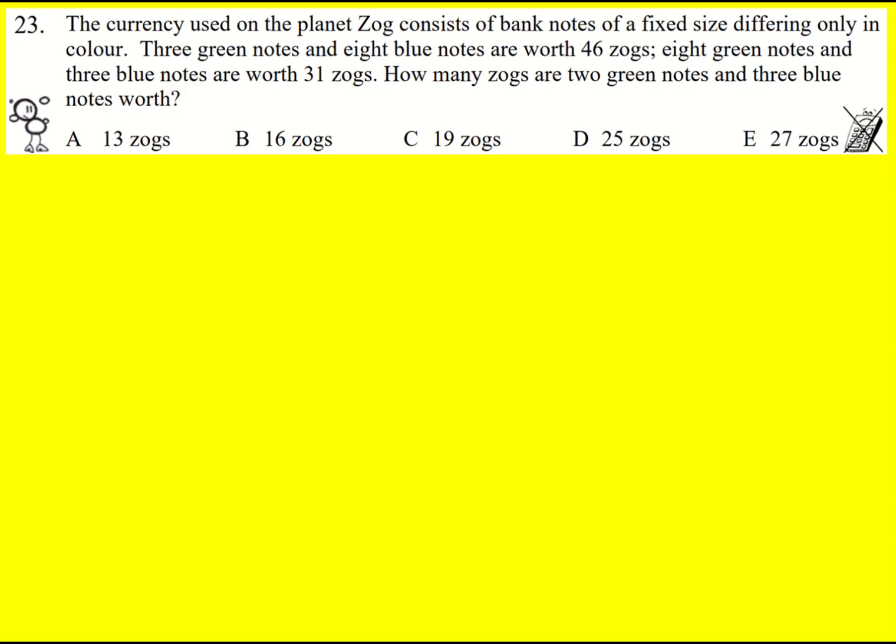I'm going to say that each green note is worth g zogs and each blue note is worth b. So then 3g plus 8b is going to equal 46, and 8g plus 3b is going to equal 31.